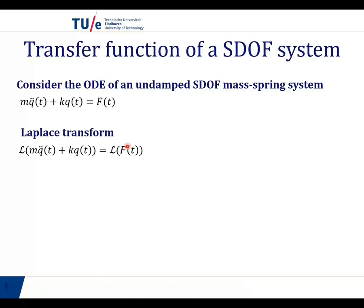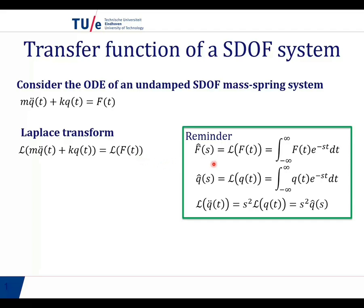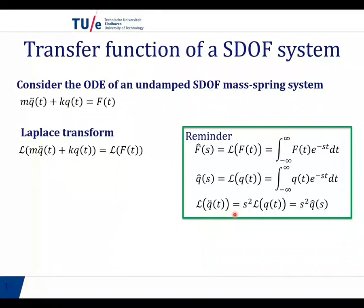Applying the Laplace transform means we apply this transformation L on both sides, on the left-hand side and on the right-hand side. Let me refresh your memory about the Laplace transform. The Laplace transform of f of t is the integral of f of t times e to the power of minus s t over time. It's a complex quantity, and that's indicated by the hat. The same holds for q, so the Laplace transform of q of t is q-hat of s. And for q-double-dot, we have the rule that the Laplace transform of q-double-dot is s squared times q-hat of s.